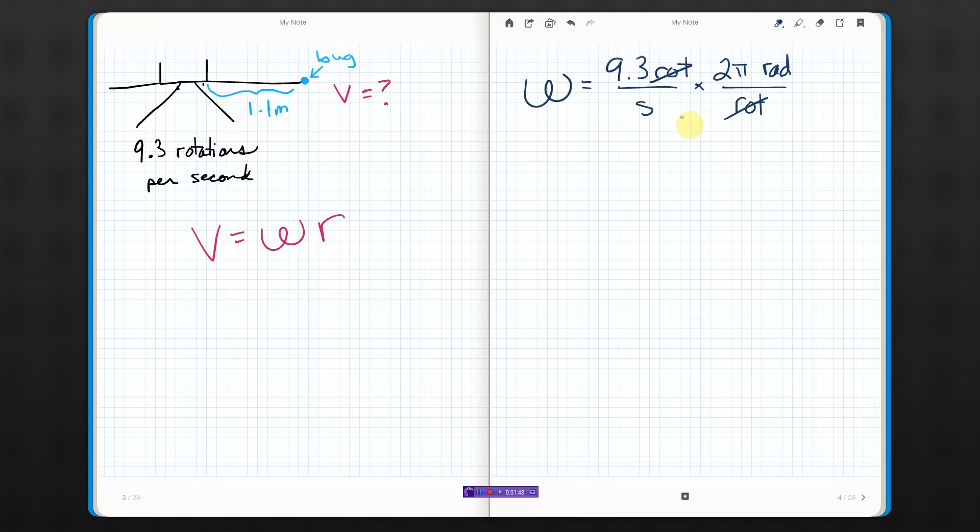And what I get is that omega really, for useful units, is 18.6 pi radians per second. Now, that I can use. So, I'm going to come back over here and use it.